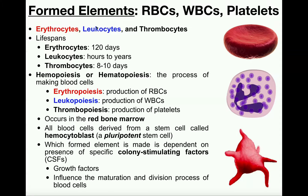In this video we're going to discuss the very basics of formed elements. Formed elements is a fancy term for really just the cells of the blood, and we have three types of cells: red blood cells or erythrocytes, white blood cells or leukocytes, and platelets which are also called thrombocytes. So these are our three formed elements.